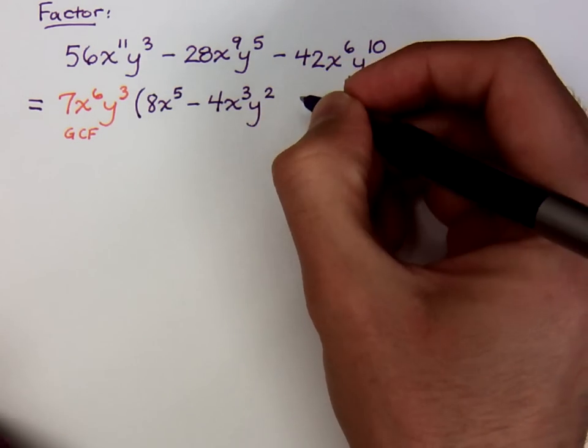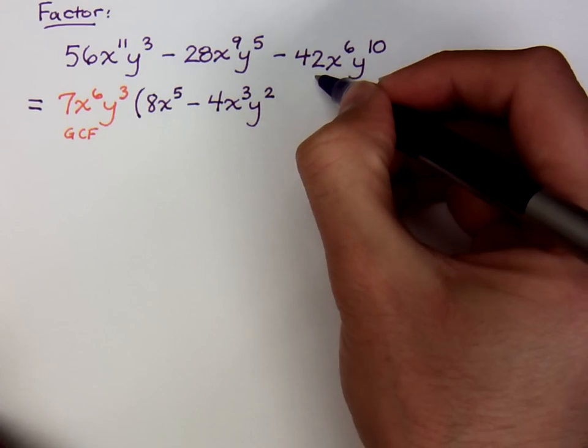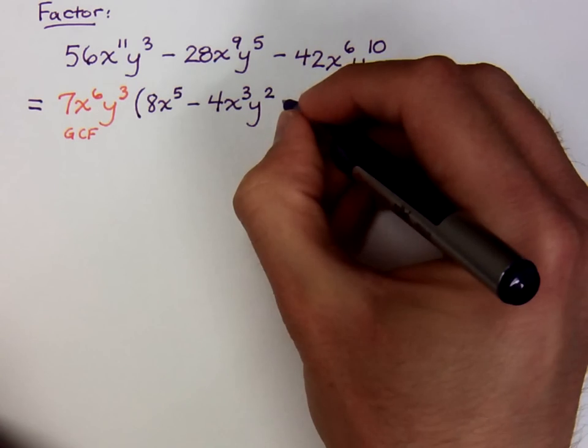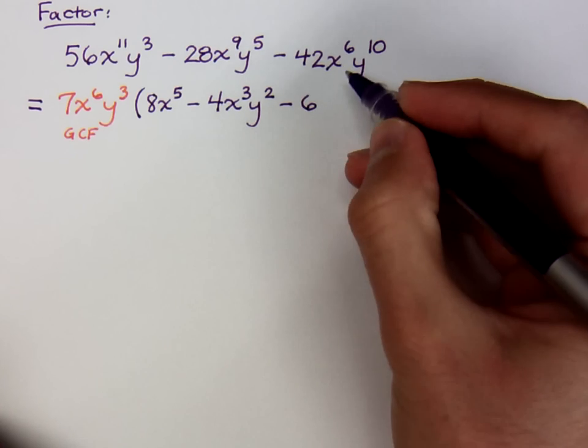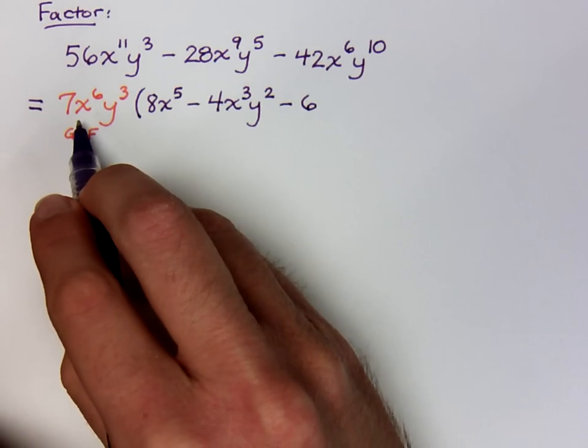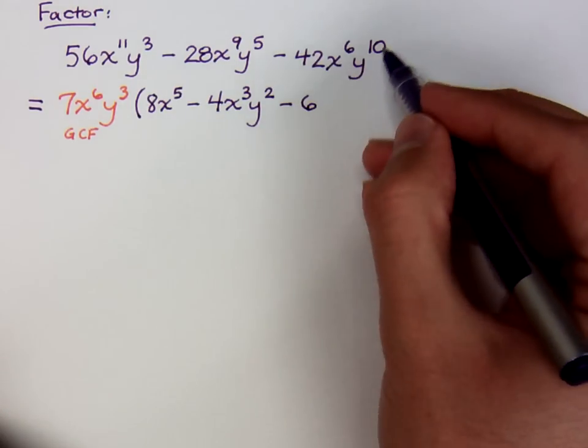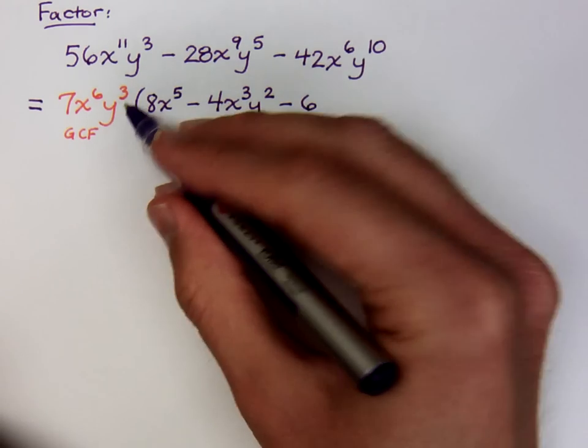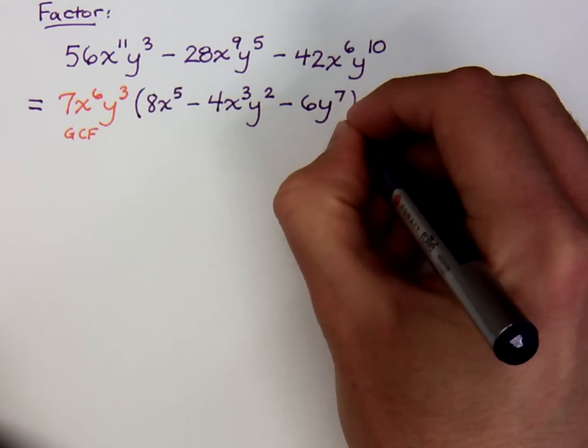And we're done for the middle term. Now for the last guy. Forty-two, or negative forty-two divided by seven is negative six. You had six factors of x, you took out six factors of x, so you don't have any x's left. For the y's, you had ten, you took out three, so that leaves us with y to the seventh.